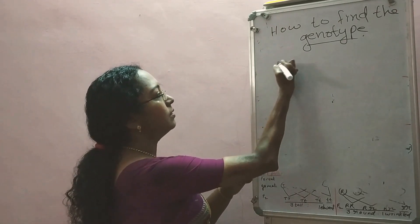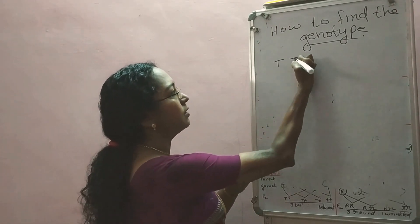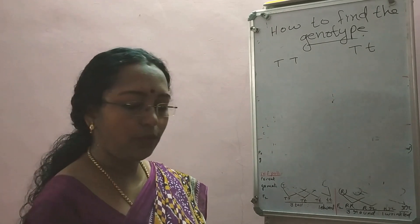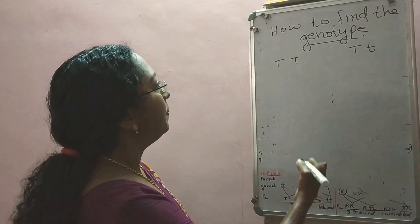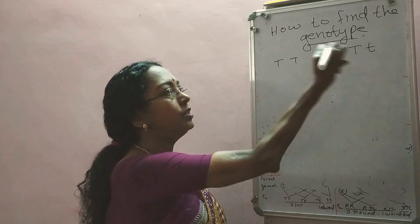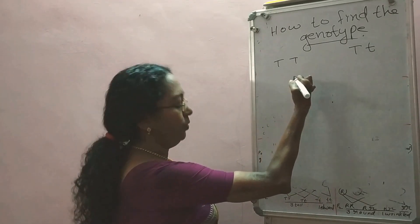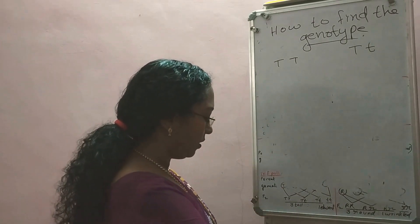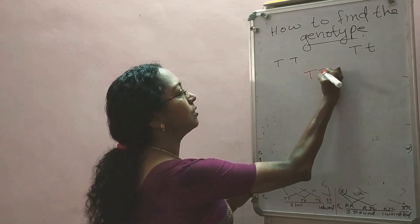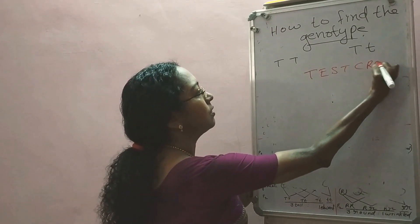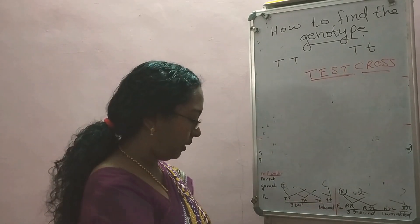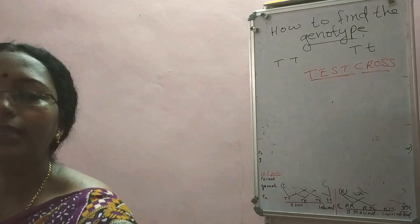Suppose we have a plant capital T capital T — tall. Another plant is capital T small t — this is also tall. Phenotype of both is tall. But how to find out the genotype? Here you use a cross called a test cross. From the word itself it is clear: test — what to test? The genotype. Test cross is used to test the genotype. For this test cross we take the sample and cross it with a homozygous recessive parent.